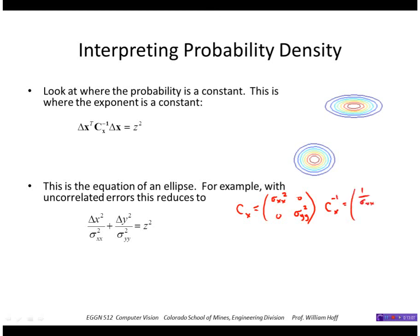So plugging that in here, I get delta x, delta y, times 1 over sigma xx squared, 1 over sigma yy squared.